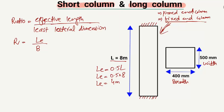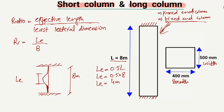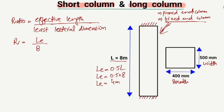The effective length means the buckling length of the column. For our 8-meter column, it will buckle only over 0.5L — so the effective or buckling length is 4 meters, located at the center of the column. For a pin-end column, the effective length equals the full length of the column with no reduction.